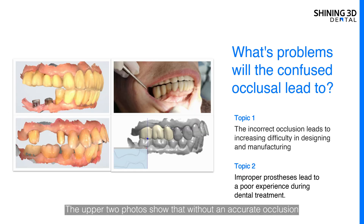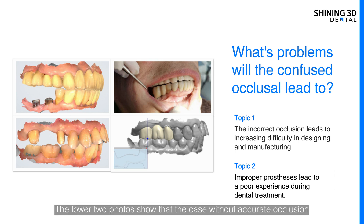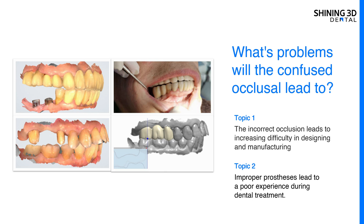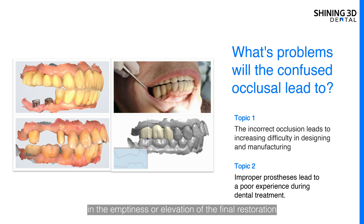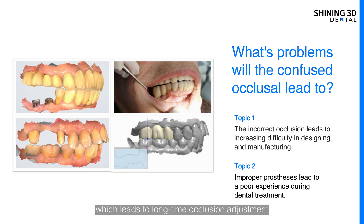The upper two photos show that without an accurate occlusion, there is insufficient occlusion for the final restoration. The lower two photos show that a case without accurate occlusion leads to some uncertainty during the CAD process. The inaccurate occlusion results in the emptiness or elevation of the final restoration, which leads to long-time occlusion adjustment and brings a poor dental experience to patients.